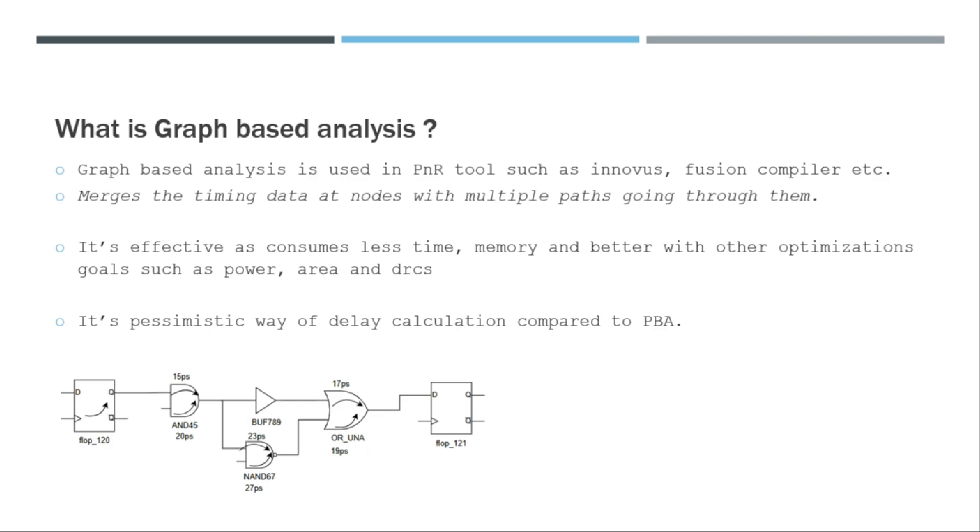So let's consider a situation where the flop 120 is going to the flop 121. A signal is going from 120 to 121. So now in this case, if you can see, there is this AND 45 over here and it has two delay arcs. One is 15 PS, another one is 20 PS. Similarly, all the other gates over here also have different delays from different delay arcs.